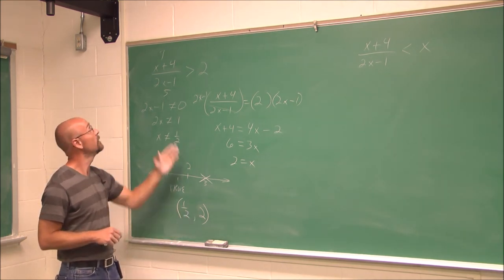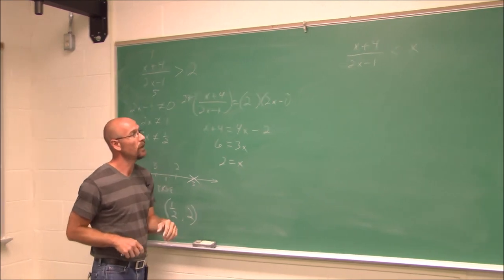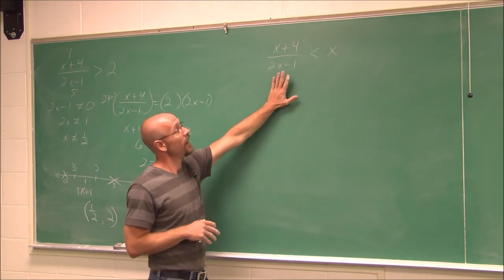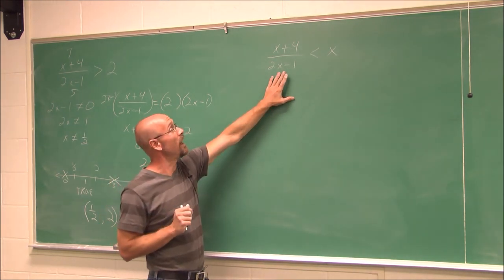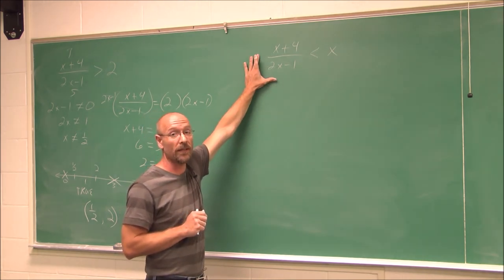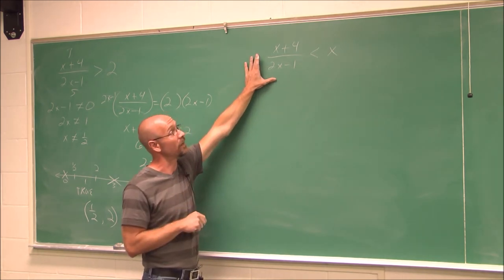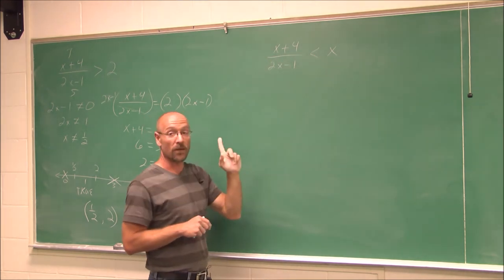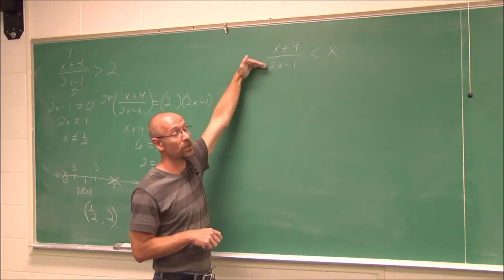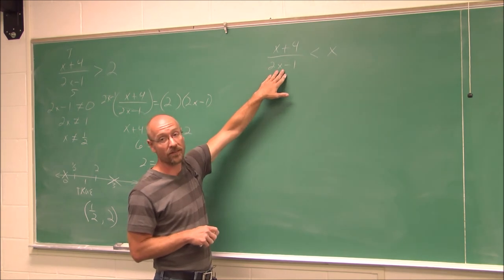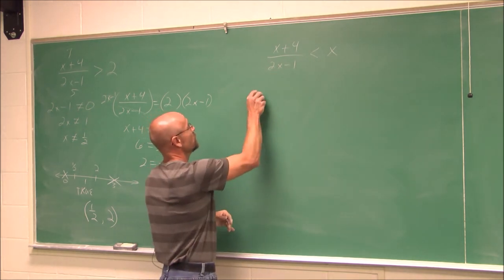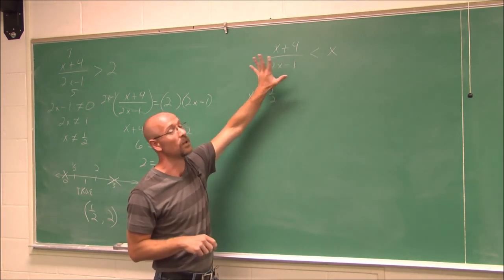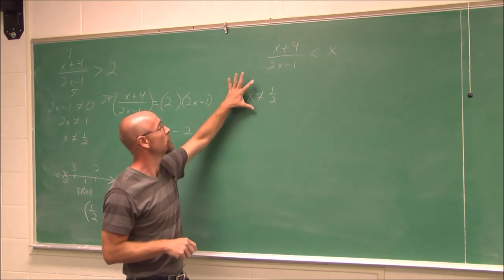Let's look at this one here — I kind of like it. It combines both a rational inequality and the methods of quadratics, because we notice we have x's on both sides of this inequality. The first thing we do is determine any restrictions. Just like the last one, we have that same denominator — so our restriction is x cannot be 1/2, because 2 times 1/2 is 1, and 1 minus 1 is 0. I can never divide by 0.